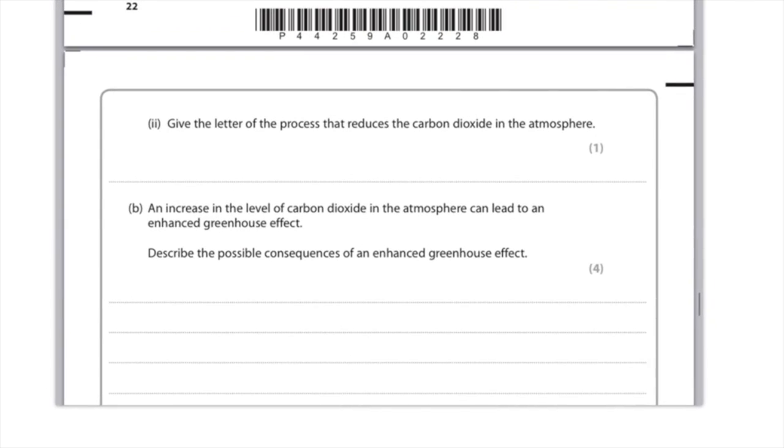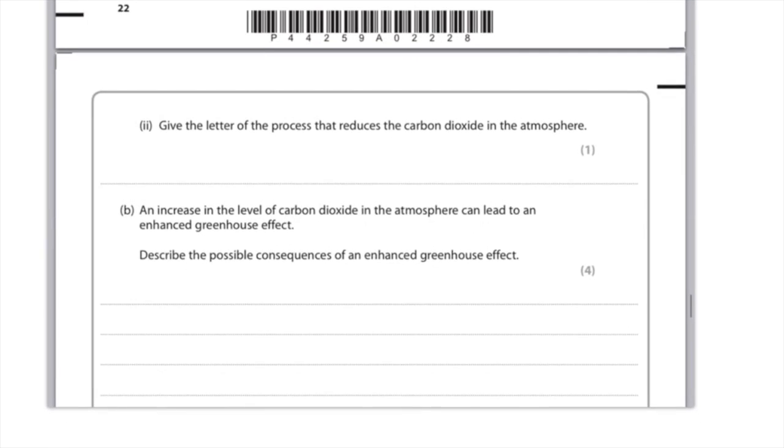The next question was, suggest two ways to reduce the build-up of greenhouse gases in the atmosphere. What you could say here is plant more trees, because obviously that'll absorb some of the carbon dioxide. Or you could say reduce the amount of cattle. Because remember when cattle fart and burp, that sounds so gross, they release a lot of methane, which is a greenhouse gas. So if you reduce cattle farming, then you'll help the greenhouse effect.